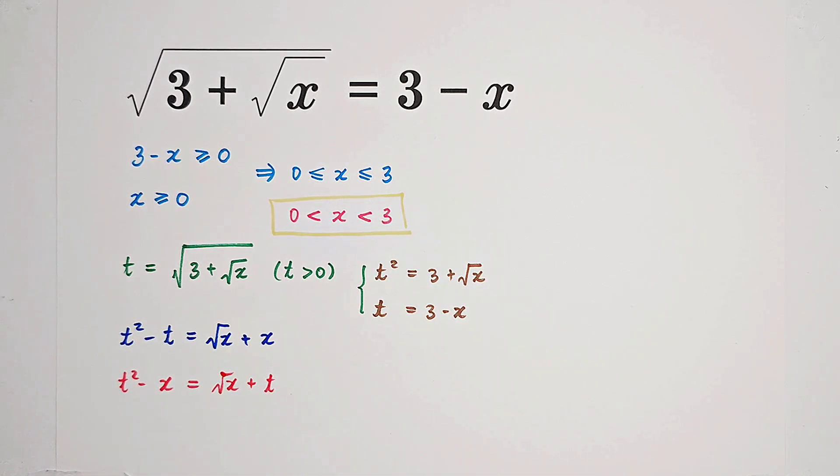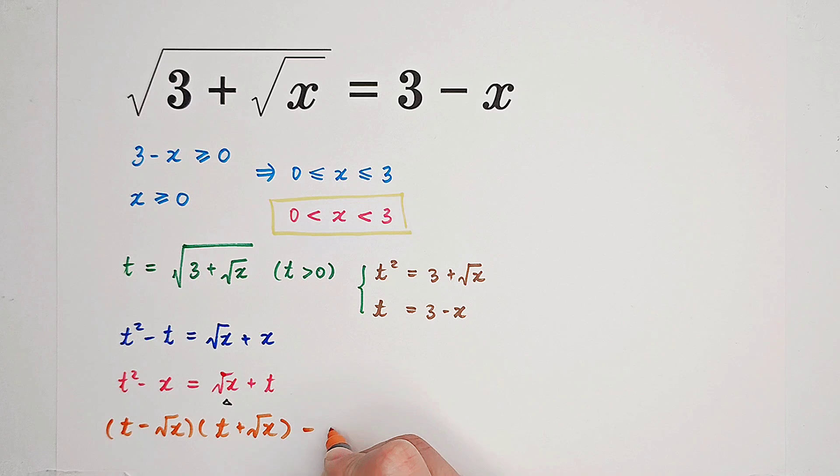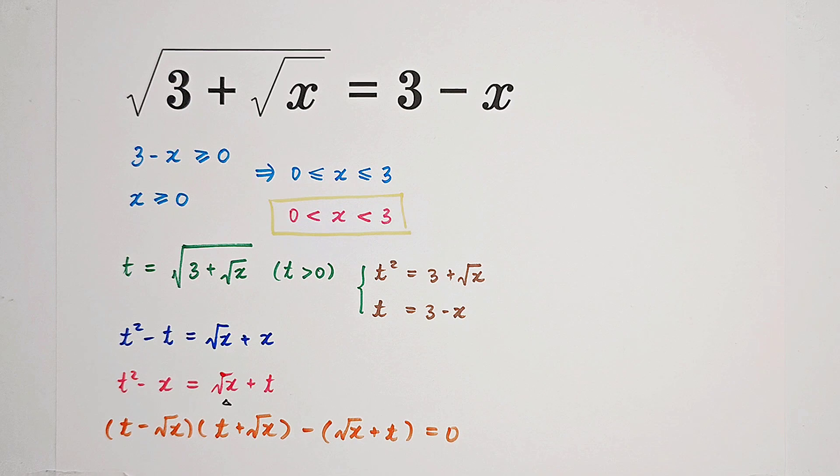The left hand side can be actually factorized. Because you see, we have a square root of x here. And x is just square root of x all squared. So the left hand side is t minus square root of x times t plus square root of x. And we subtract the right hand side from both sides. We get square root of x plus t equals 0.